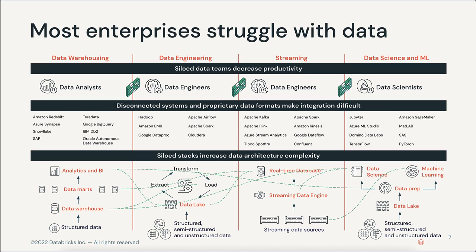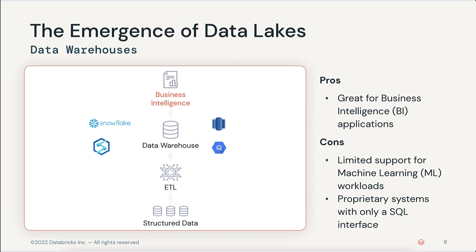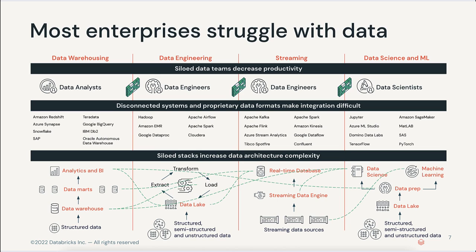Sometimes this complexity works the other way around: those who create org charts become accidental data architects. If we have four teams of data professionals — not even accounting for other lines of business — each team, left to their own devices, might begin to use tools most familiar to their workflow and store data in ways that best suit their use case. Communication slows down, which hinders innovation and speed. Different teams end up with different versions of the truth, multiple copies of data exist, there's no consistent security or governance model, and you end up with closed systems with disconnected and less productive data teams.